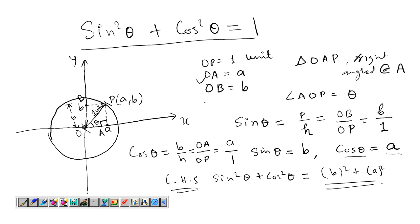Now in this triangle which is a right angled triangle, this is the length a, this is the length b and this is 1 unit, right angled here at A, this is the point B.